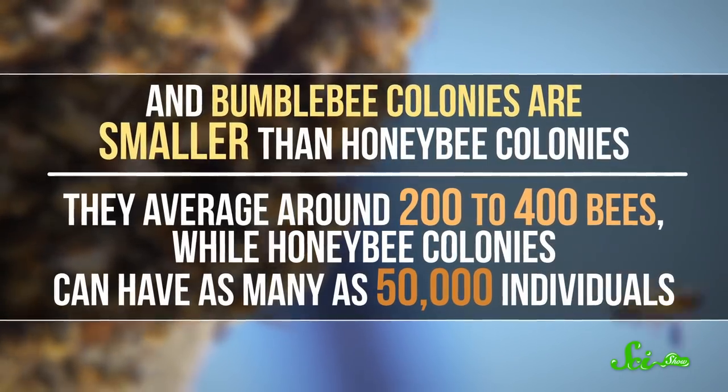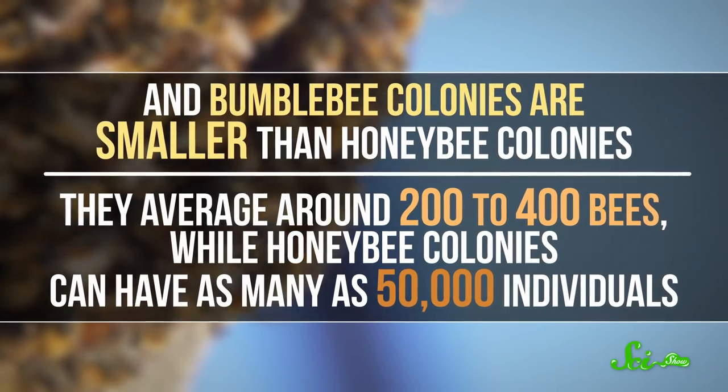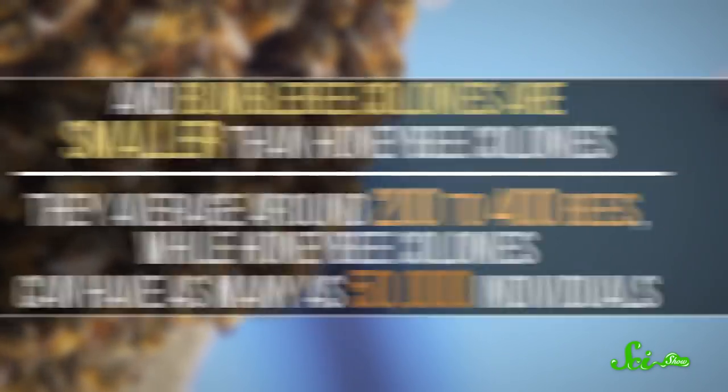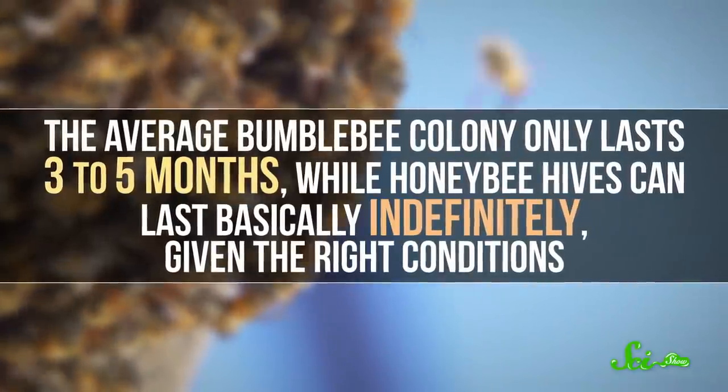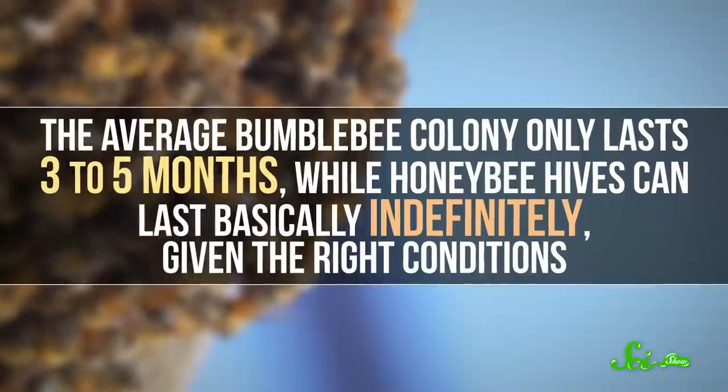And bumblebee colonies are smaller than honeybee colonies. They average around 200 to 400 bees, while honeybee colonies have as many as 50,000 individuals. But more to the point, the average bumblebee colony only lasts 3 to 5 months, while honeybee hives can last basically indefinitely given the right conditions.